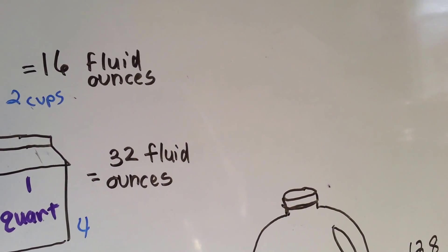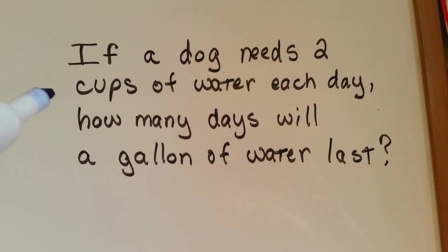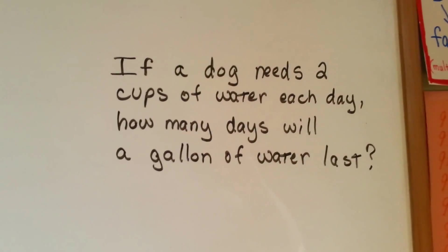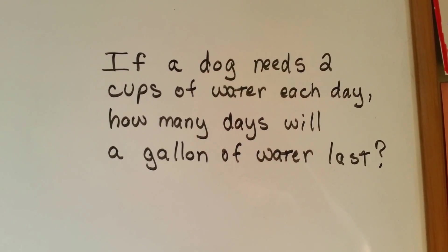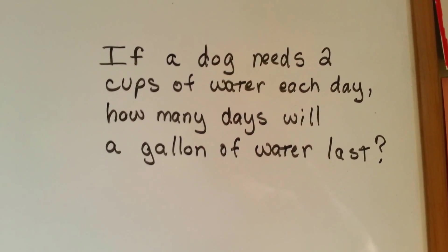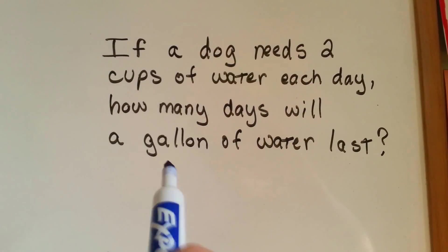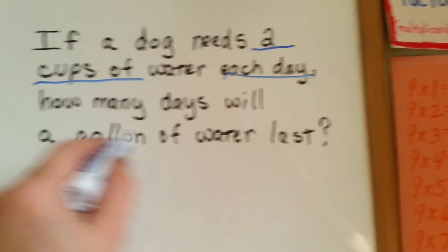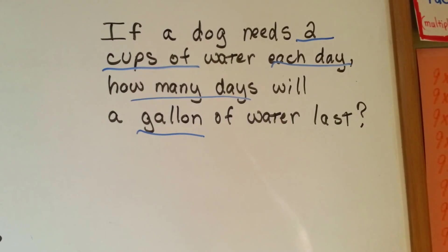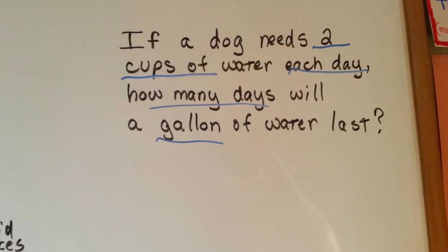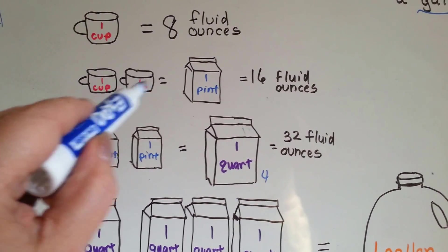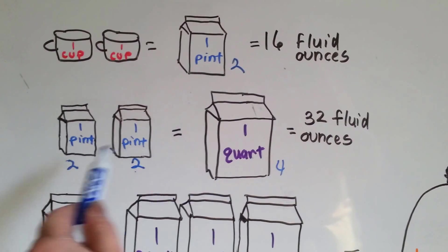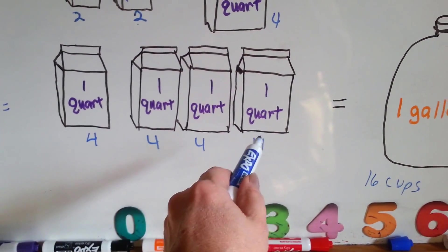Now the last one: if a dog needs two cups of water each day, how many days will a gallon of water last? Let's say the water from your faucet is bad, so you buy a gallon of water from the store for your dog, and he drinks two cups a day. We have to figure out how many cups are in a gallon. There are two cups in a pint, two cups and two cups equals a quart, so a quart is four cups. Each quart is four cups, and there are four quarts in a gallon — so there are sixteen cups in a gallon.